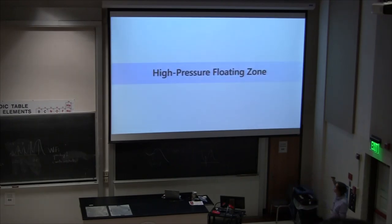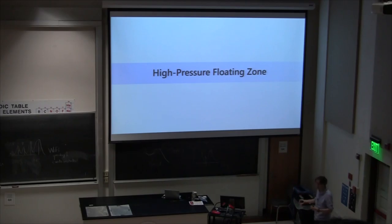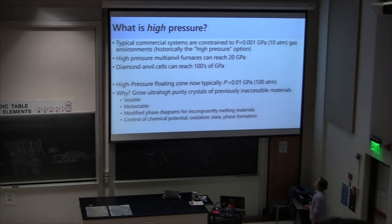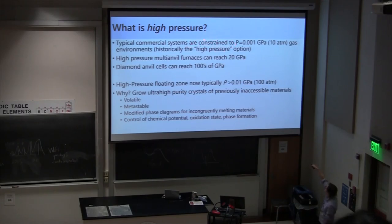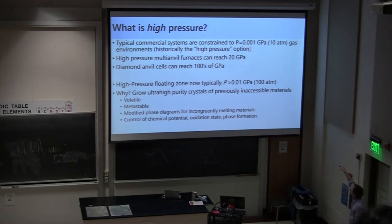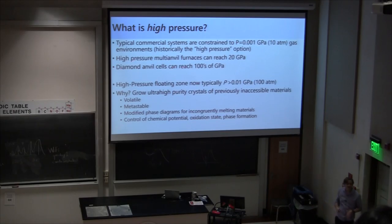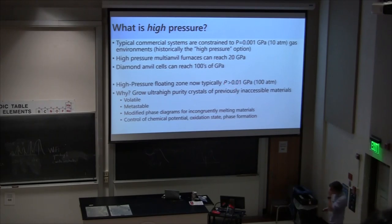Now I'll talk about high pressure floating zone. First, what do we define as high pressure? Historically, commercial mirror-driven floating zone systems were constrained to a 10-atmosphere gas environment — that was the so-called 'high pressure option' when ordering, which is only 0.001 GPa. Other furnaces, like high pressure multi-anvil furnaces, can reach 20 GPa, and diamond anvil cells can go hundreds of GPa. So we have to be careful what we mean by high pressure. A high pressure floating zone now is typically defined as pressures greater than 0.01 GPa, or roughly 100 atmospheres.